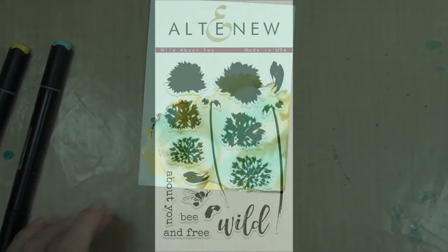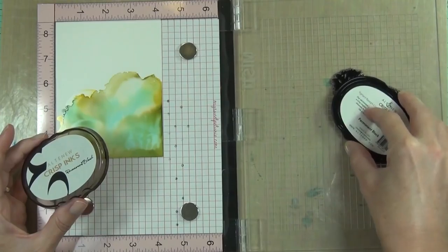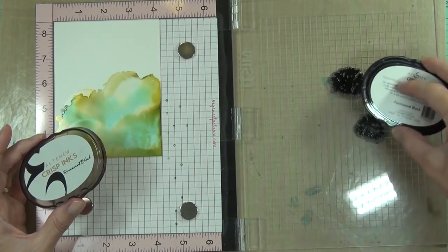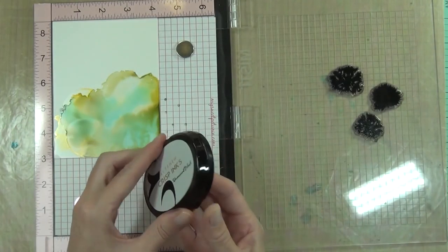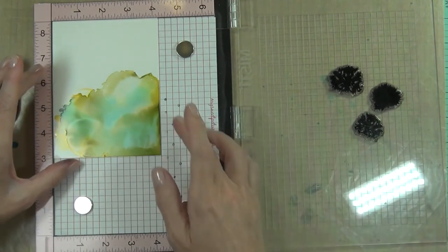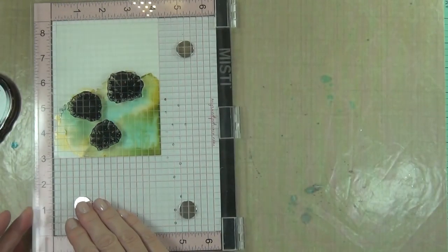The stamp set I want to be using today is called World About You, and this is a layering stamp set but I want to use it as a silhouette image. So I've chosen both a solid and one of the more shaded color—one not so solid image.